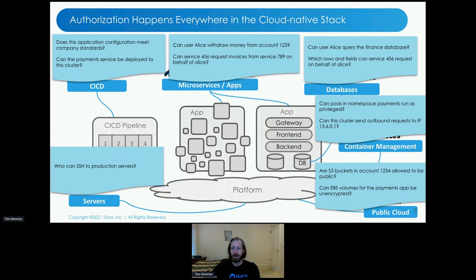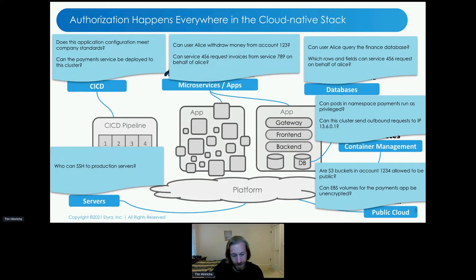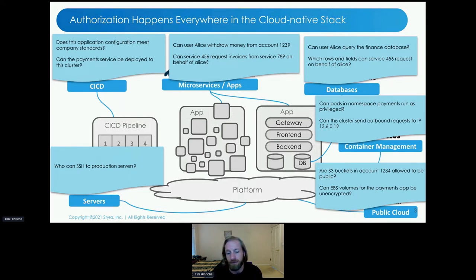At the container management level, every time a developer tries to spin up a new pod, new ingress, or new daemon set on Kubernetes — is that resource configured safely? Is it authorized to be deployed onto that cluster? At the public cloud layer, we see similar authorization problems: is this public S3 bucket authorized? Can we deploy EC2 instances outside of VPCs? And at the server level, we've always had authorization challenges: who can actually connect, who can SSH to these servers?